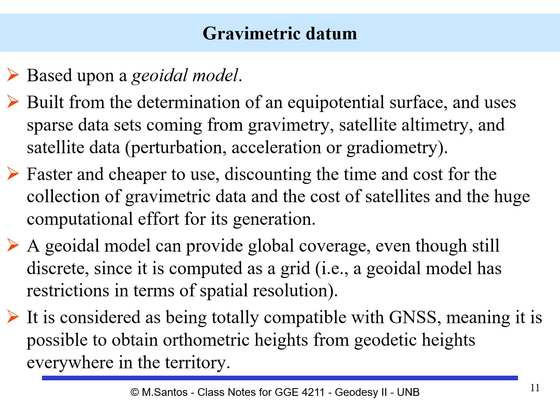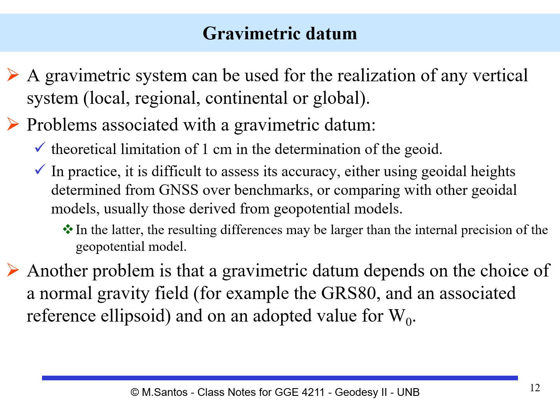A geoidal model is considered totally compatible with GNSS, in the sense that we can obtain orthometric heights directly from geodetic heights everywhere in any territory. One big advantage of a gravimetric datum is that it can be used for the realization of any vertical system — local, regional, continental, or global.